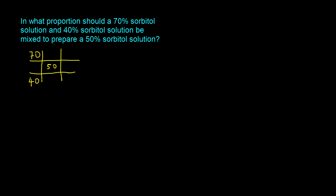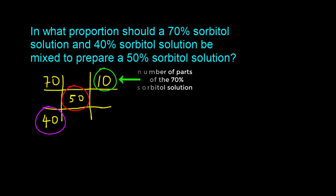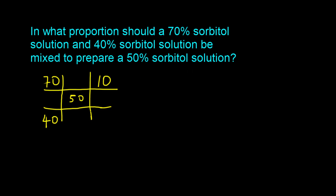We take the 40 (the lower concentration) and subtract it from 50 (the desired concentration): 50 minus 40 equals 10. We put that on the top right. This 10 refers to the number of parts of the 70% sorbitol solution. Next, we take the 50 (desired concentration) and subtract it from 70 (the higher concentration).